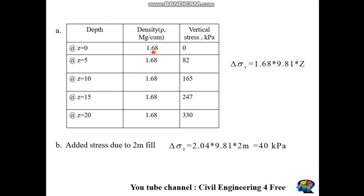For the effective vertical stress prior to fill placement, vertical stress equals unit weight multiplied by depth. Since unit weight isn't given but density is, unit weight equals density times gravity. By substituting various depths into this formula, we can estimate the vertical stress.